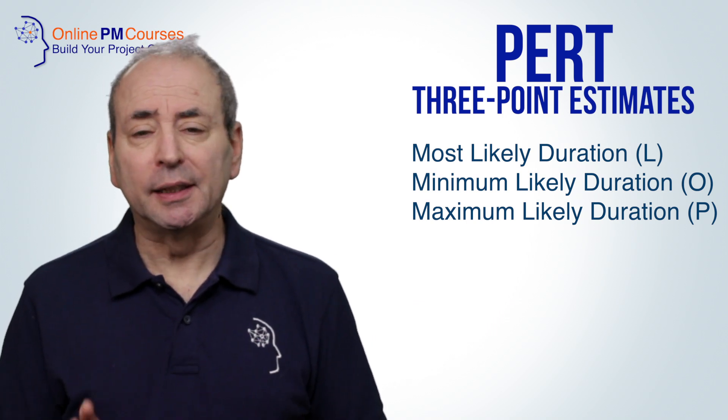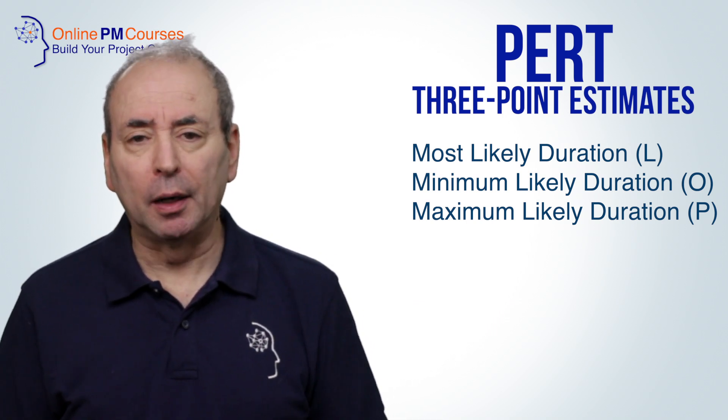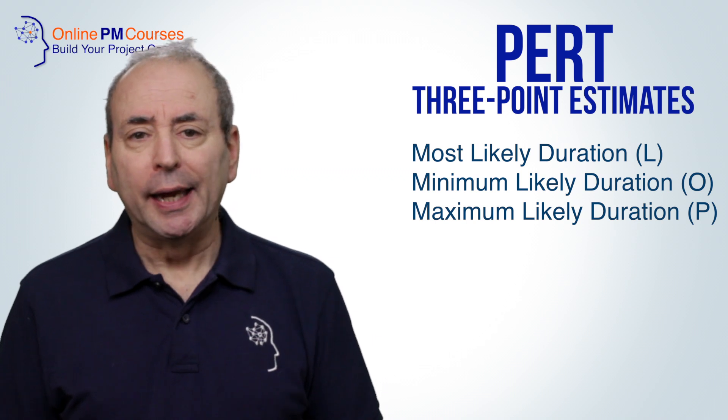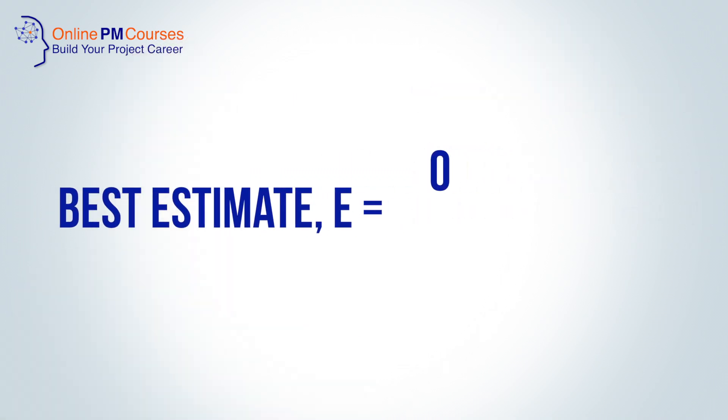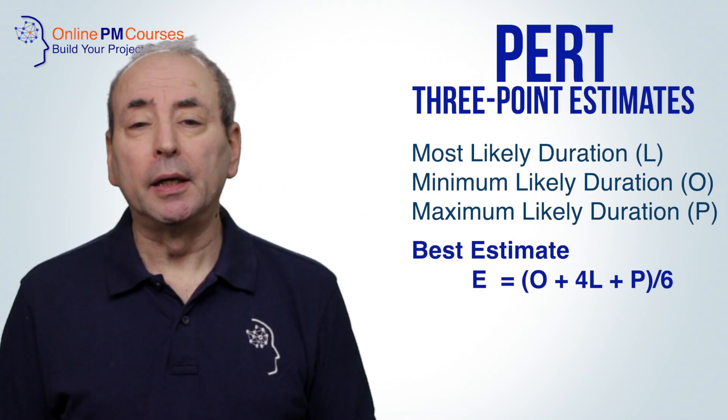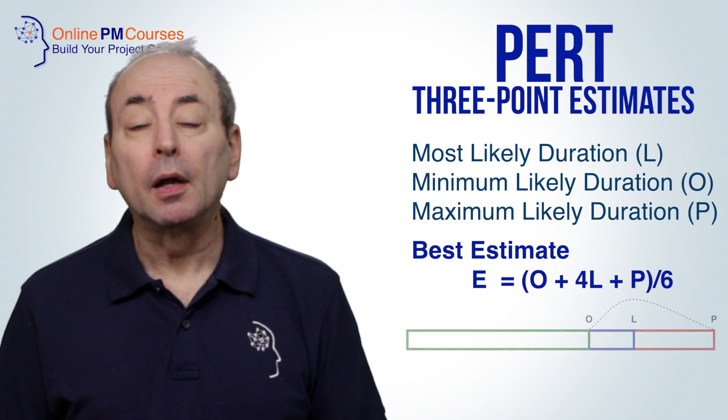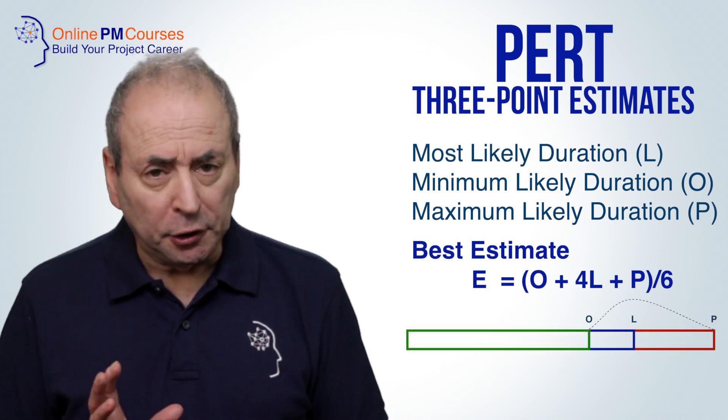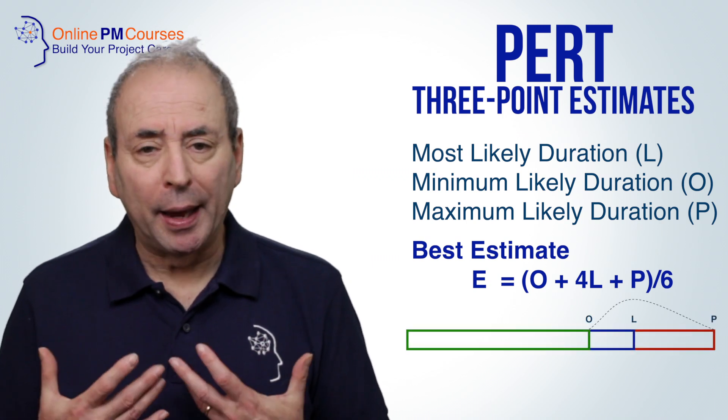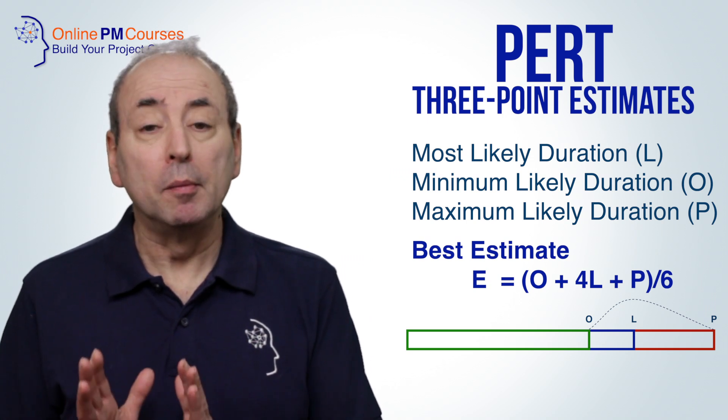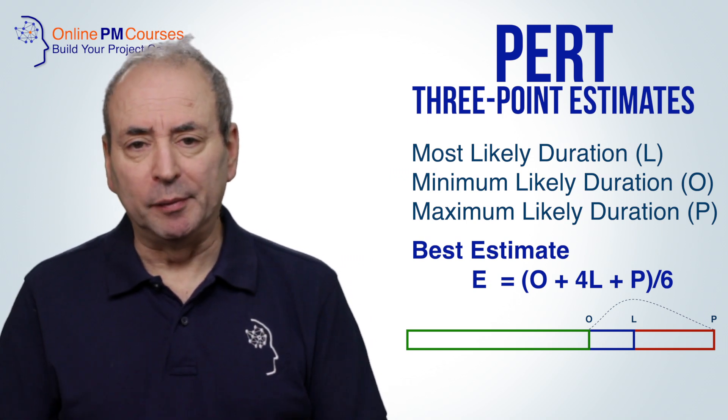There are numerous simple calculations that can be applied, but the most common is to take 1 times the optimistic estimate plus 4 times the base estimate plus 1 times the pessimistic estimate, and divide all of that by 6. Typically, we would not expect the distribution of estimates to be symmetric, that is to say that usually I'd expect that the pessimistic estimate would be further from the most likely estimate than the optimistic estimate.